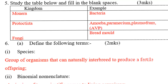Question: fill in the blank spaces in the table. Kingdom examples include: Monera — bacteria; Protista — amoeba, paramecium, plasmodium; and Fungi — bread mould.